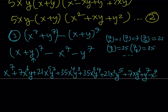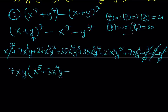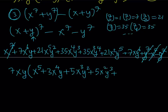We end up with a large expression, but we can simplify it. We factor out 7xy as the greatest common factor, giving: x to the fifth plus 3x to the fourth y plus 5x cubed y squared plus 5x squared y cubed plus 3xy to the fourth plus y to the fifth.